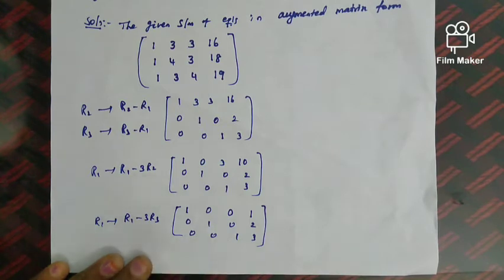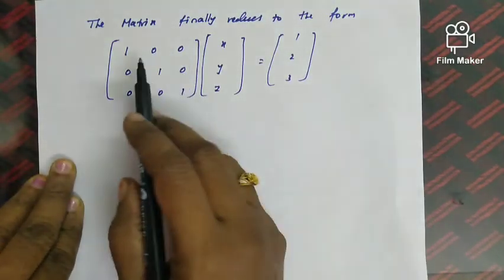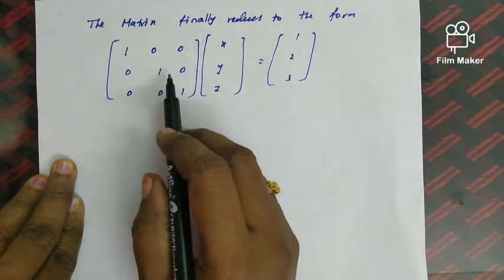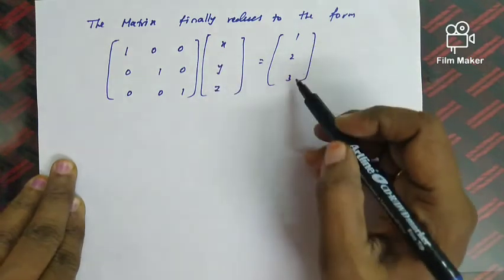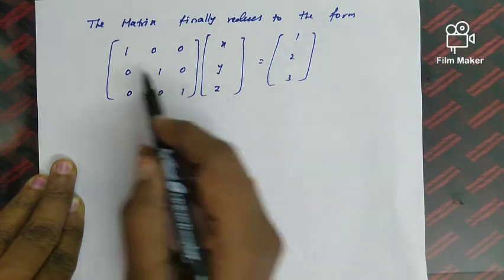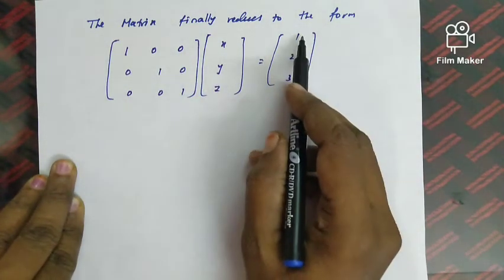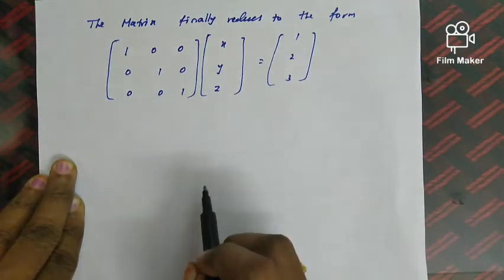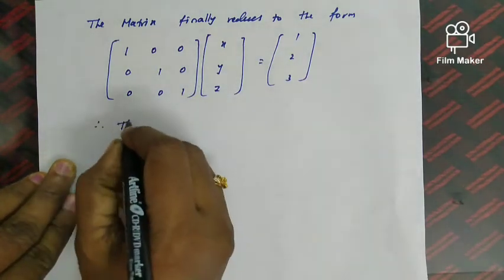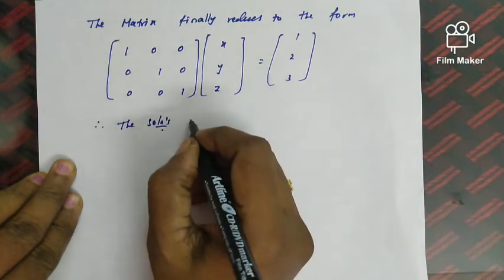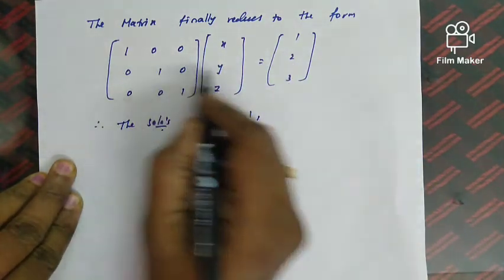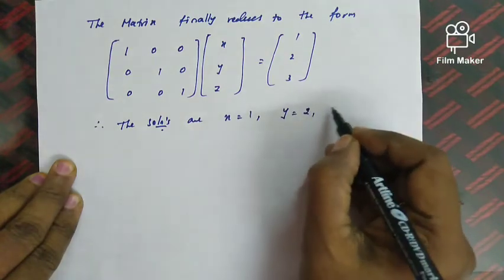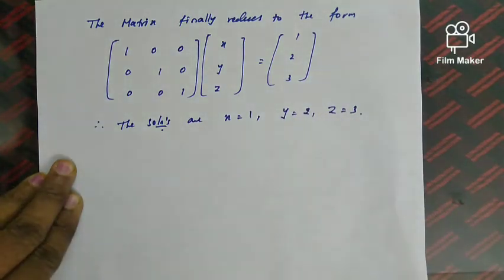The diagonal matrix gives us the solution directly: x = 1, y = 2, z = 3. Therefore, the required solutions are x = 1, y = 2, z = 3. This is the required solution of the system of equations.